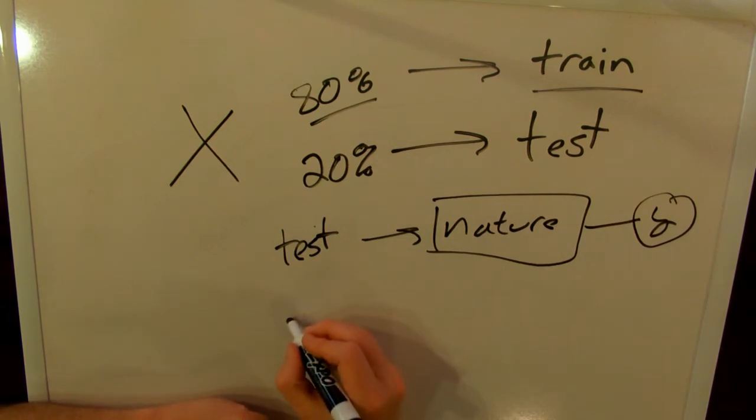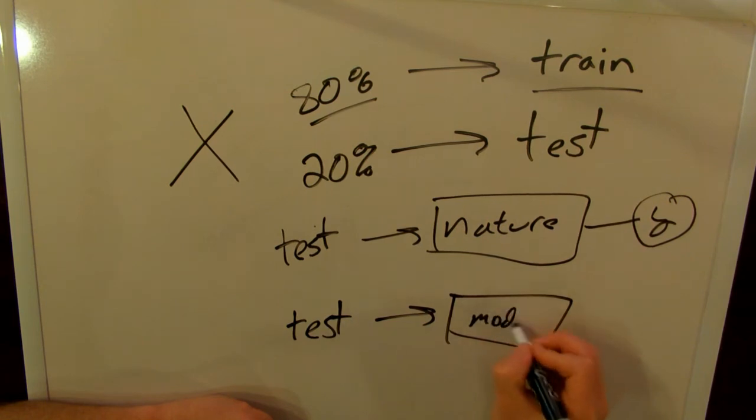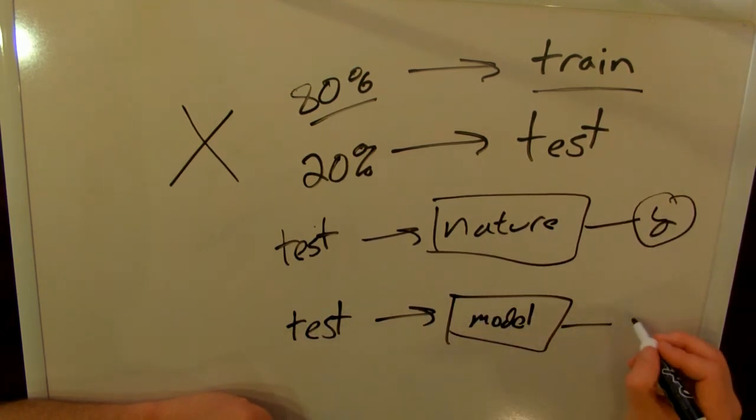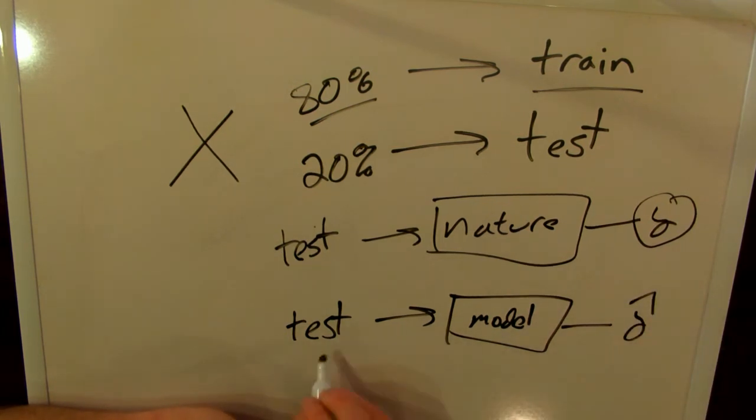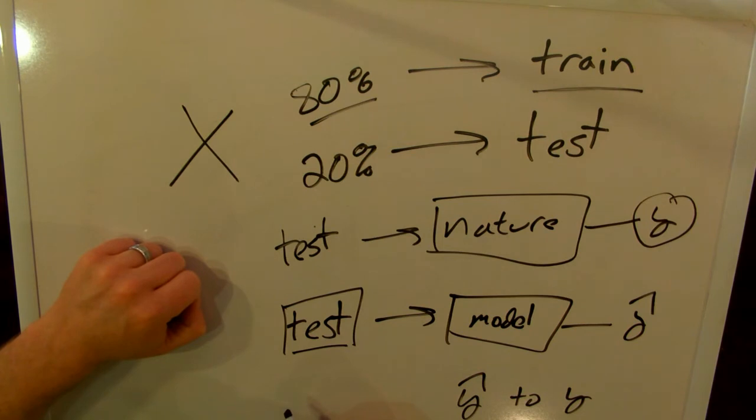What we can do to test our model is to take the same test set of data and send it into our model, and then we will record the Y-hats. Now keep in mind, we've split this out before training, so that means that the computer has never seen this set of data. So when we compare Y-hat to Y for a set of data that the computer has never seen before, we can be reasonably sure that that's a good measurement of the computer's performance in its model versus the natural process.